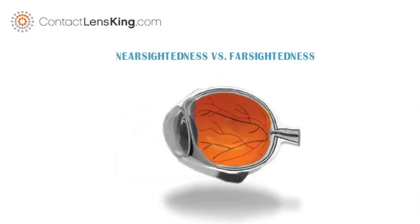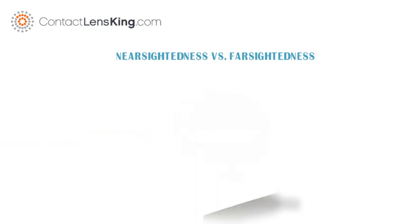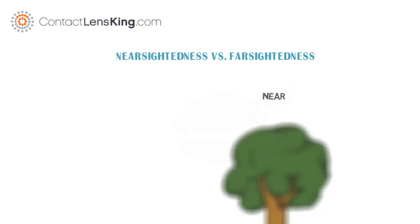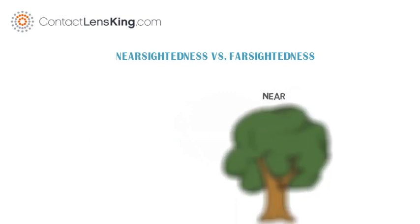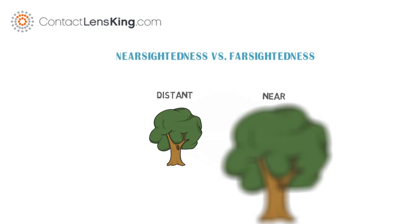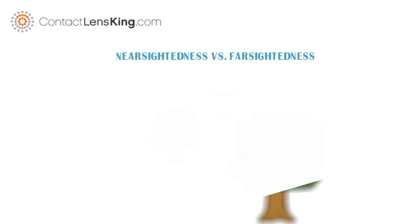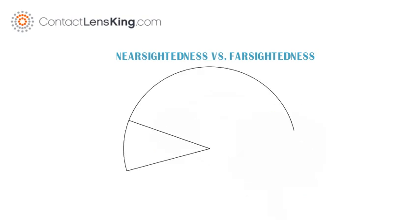Farsightedness, on the other hand, occurs when the shape of the eye, or cornea, causes the refraction of light to focus behind the retina. This long focal point causes near objects to seem blurry, and distant objects to be clear. Farsightedness affects approximately 10% of Americans.